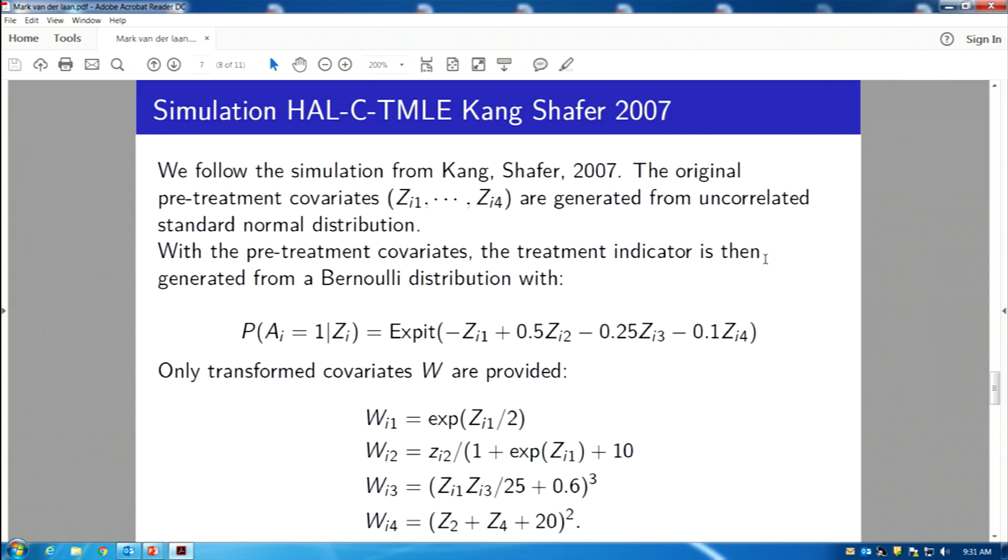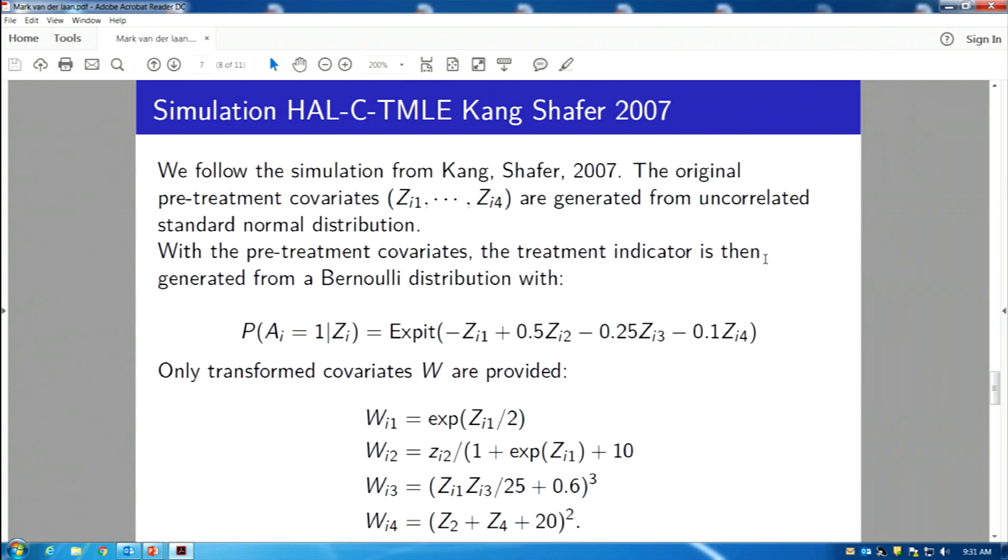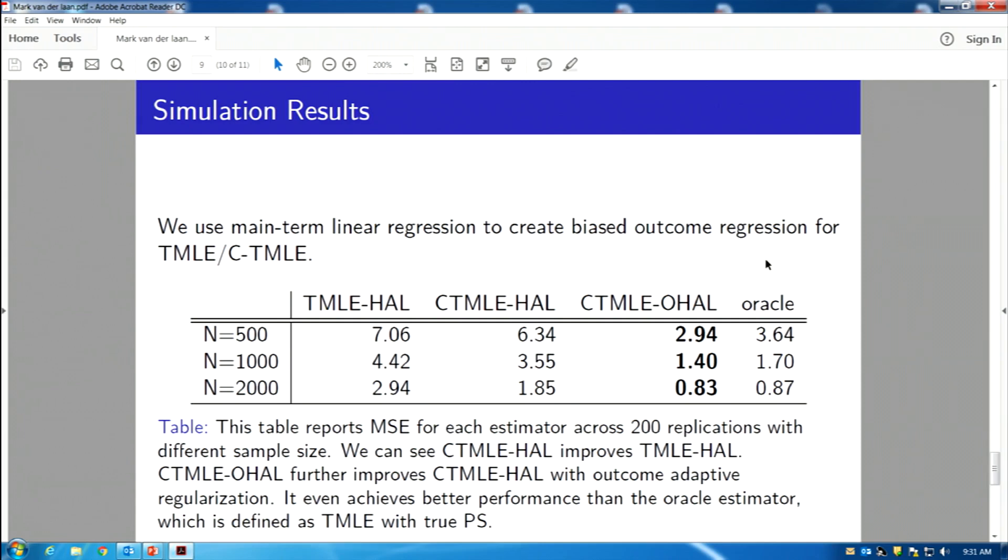And to just give you an idea how robust these methods are these days, here's a simulation set up by King and Shafer essentially to break down these type of methods, kind of arguing for more, why can we not use something simple? Now here, what they do is they do set up a simulation where the treatment is a function of a bunch of variables, but the only variables you get to see are these W's, which are very complex functions. So when we apply these estimators we develop, these targeted maximum likelihood estimators, they are not able to cheat in any way, right? They don't even care what the truth is.